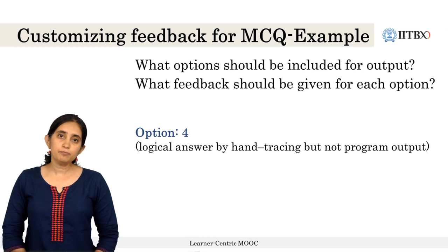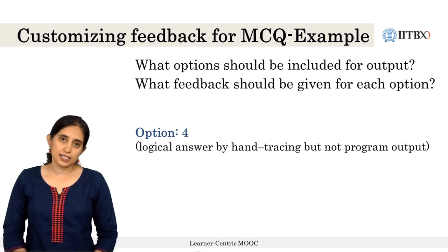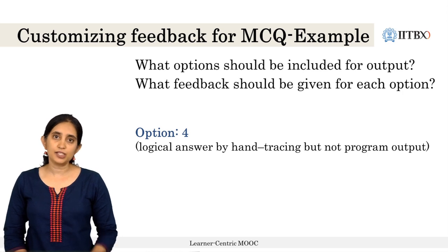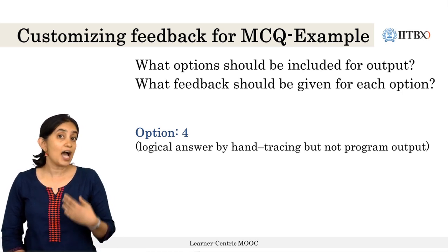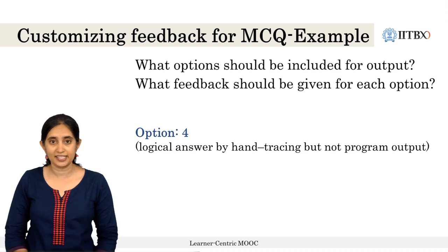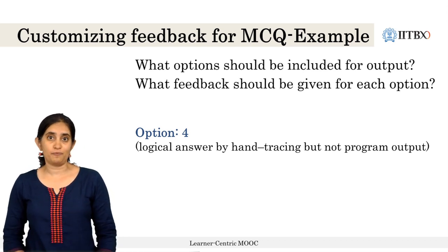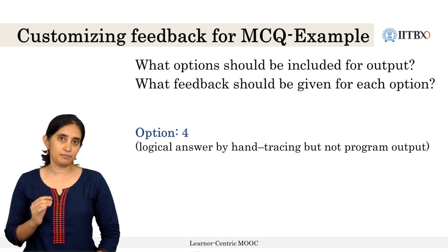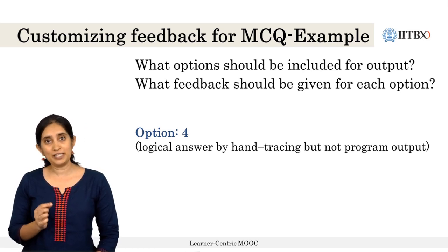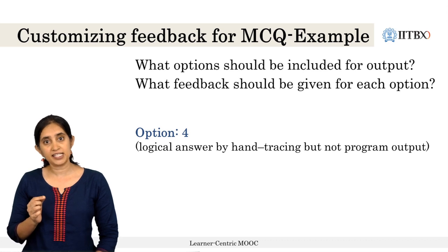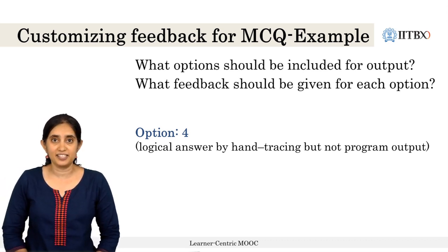One possible option is 4. This is the logical answer if one does a hand tracing through the steps of the program and sees how each variable changes through the iterations. But the program does not output 4, and the feedback for this option should be: trace each value of the variable ABC as the program goes through the iterations, and pay attention to the exit condition.